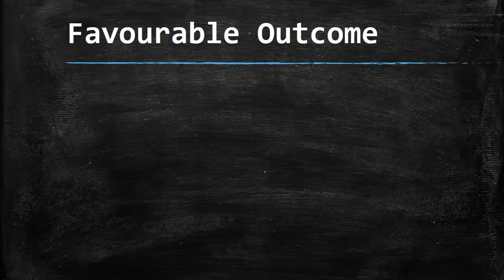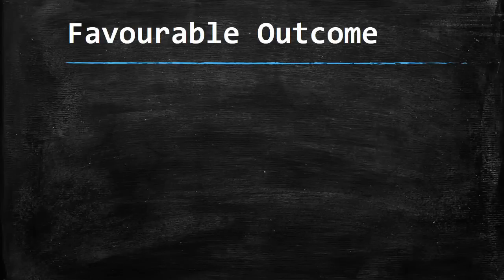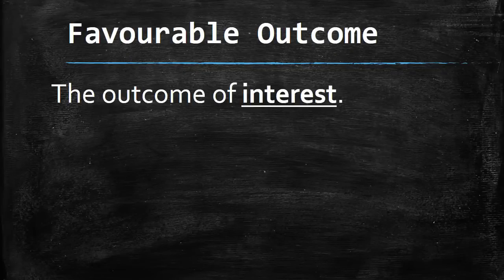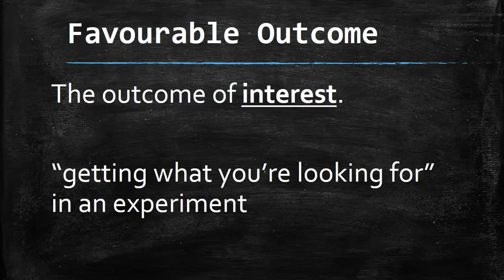Now we have one more definition to look at. It's called favorable outcome, and this one's kind of confusing, so pay attention. This is the outcome of interest, meaning getting what you're looking for in an experiment.